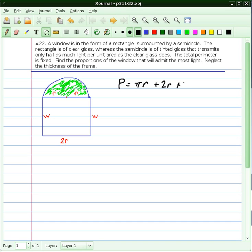We need that equation to eliminate one of the variables. In fact, I'm going to go ahead and solve for w right now. With a little bit of algebra, w would equal P, which is constant, minus πr minus 2r, all divided by 2.